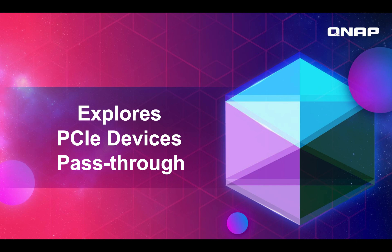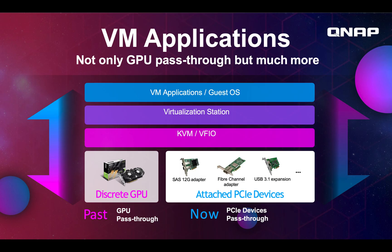I'd like to talk a little bit more about PCIe Pass-Through, because I think it's going to be a very helpful feature. In the past, we had GPU Pass-Through. This allowed you to connect a GPU to your VM so that your VM can have hardware acceleration — maybe you're running Adobe Premiere and need to do rendering. Whatever it is, this could give more functionality to your VM.